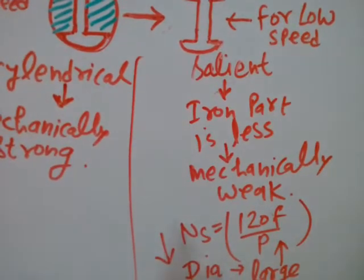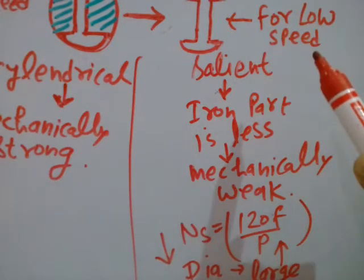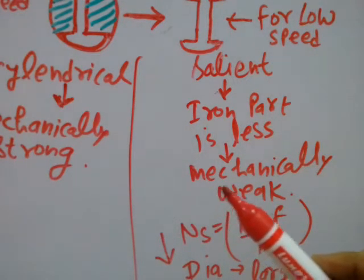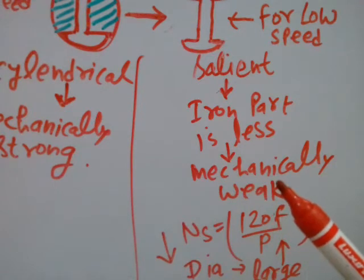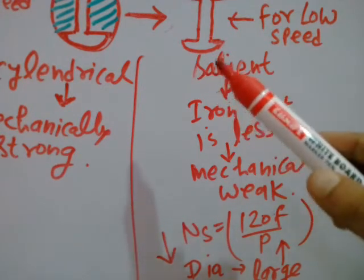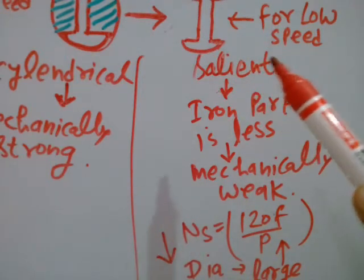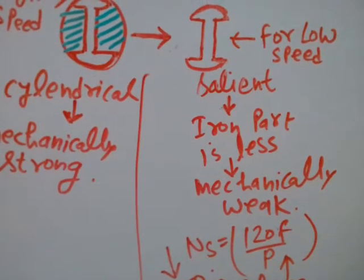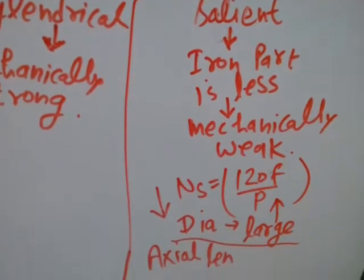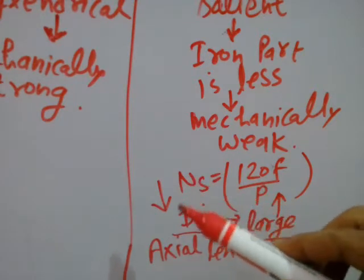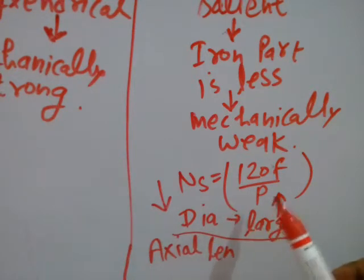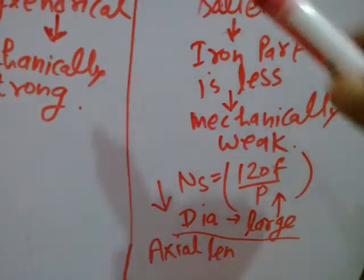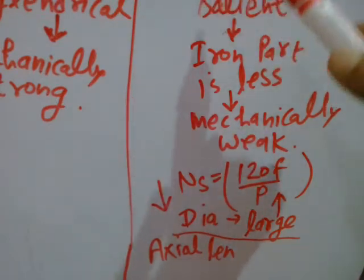Salient pole rotor structure is used for low speed because of its low mechanical strength — it is mechanically weak, so you cannot operate this salient pole structure at high speed. You can only operate it at low speed. If the speed is low, then the number of poles will be high, meaning if you want to accommodate a large number of poles on the same periphery, the diameter will be large.